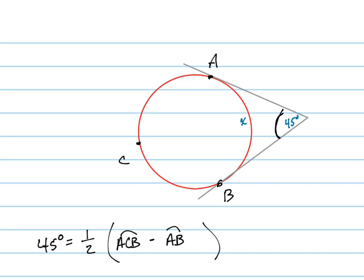So I know that arc ACB has to be equal to - I'm sorry, not 180 - it has to be equal to 360 minus x because that full circle is 360 degrees.